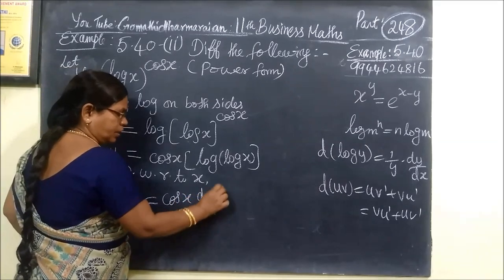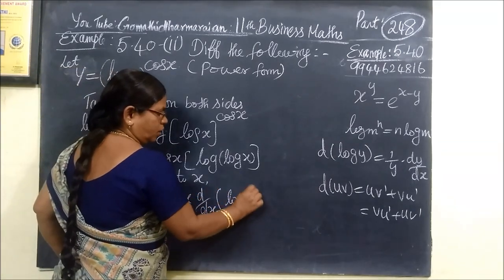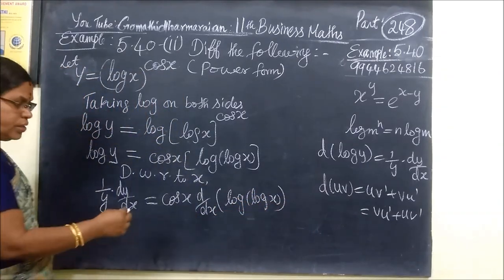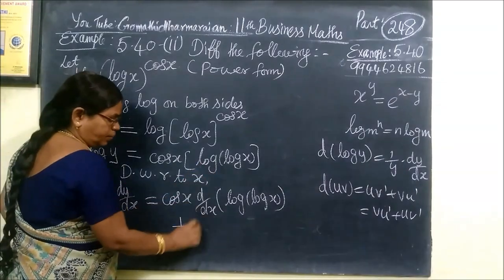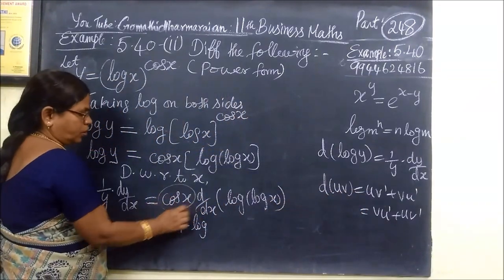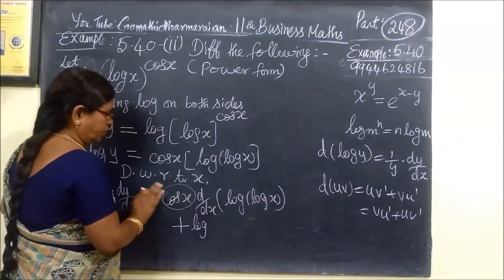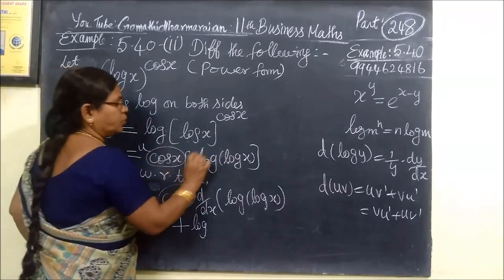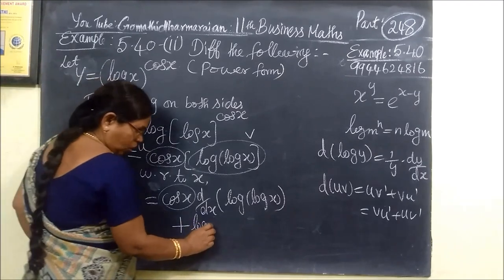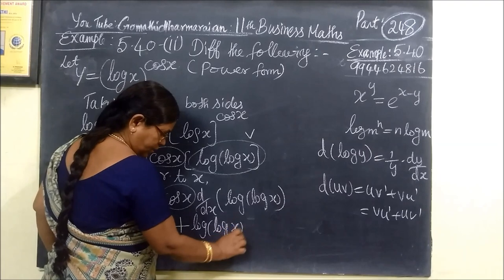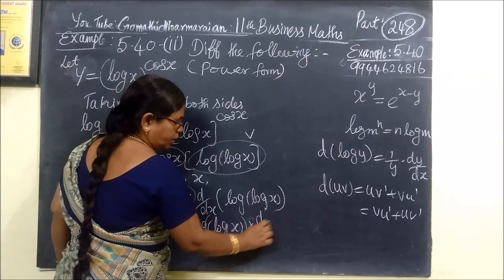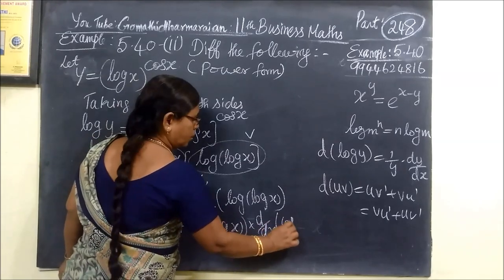d by dx of this one — this is log of log x. Then the log of this. Plus at the second term, in the formula. It is when cos is from u. Then cos is from this u, and the variable is v. Then log of log x, into dy dx of cos.